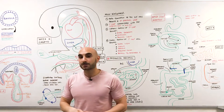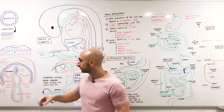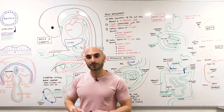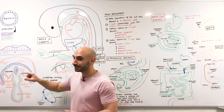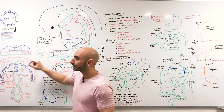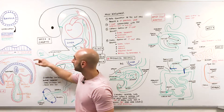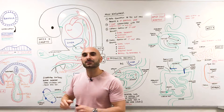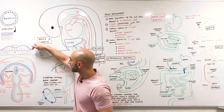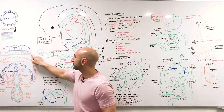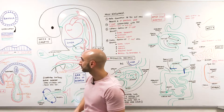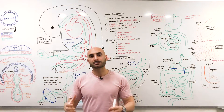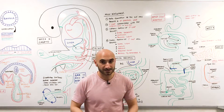The ectoderm will become your CNS and your skin. The mesoderm has three components: the paraxial mesoderm which will become muscle and somites, the intermediate mesoderm which forms kidneys and gonads, and lateral plates. There are two lateral plates: the somatic lateral plate and the splanchnic lateral plate, also called the parietal mesoderm and the visceral mesoderm. Finally, we have the endoderm, which is the focus because that's pretty much where the bulk of the GIT comes from.